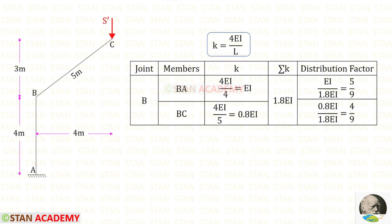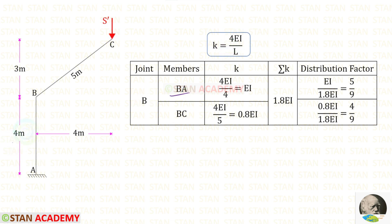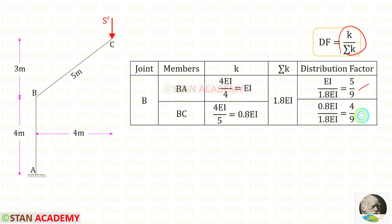Now let us find the stiffness K. From joint B, we need two stiffness values: for BA and for BC. Since point A is fixed and we assume point C is also fixed, we use the formula 4EI/L. Length of BA is 4, giving stiffness = EI. Length of BC is 5, giving stiffness = 0.8EI. Sigma K = EI + 0.8EI = 1.8EI. Using this, we can find the distribution factors.